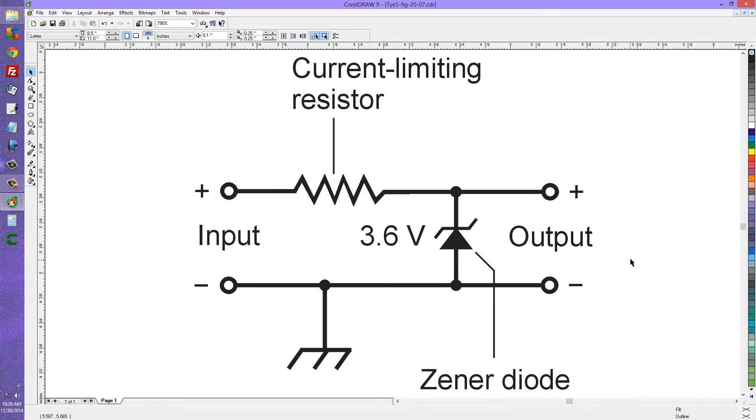Then it comes out of here regulated to 3.6 volts because any voltage greater than 3.6 volts that tries to get here is going to get clamped or limited by this diode.